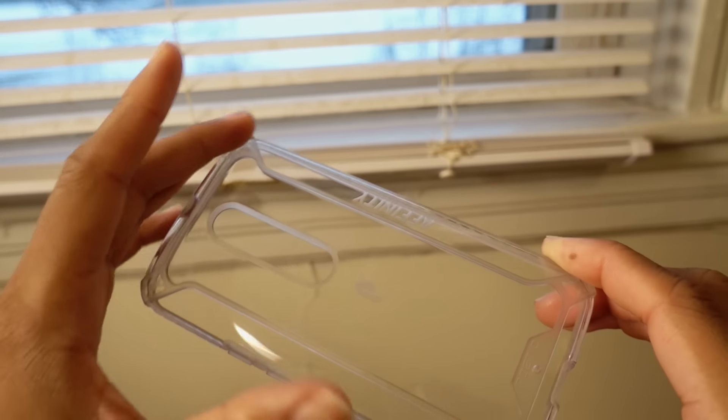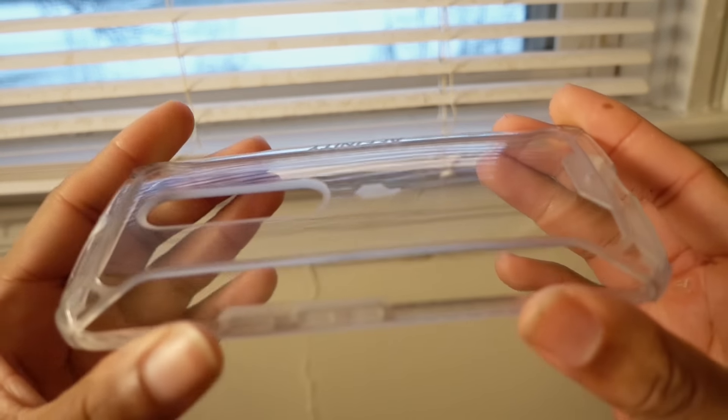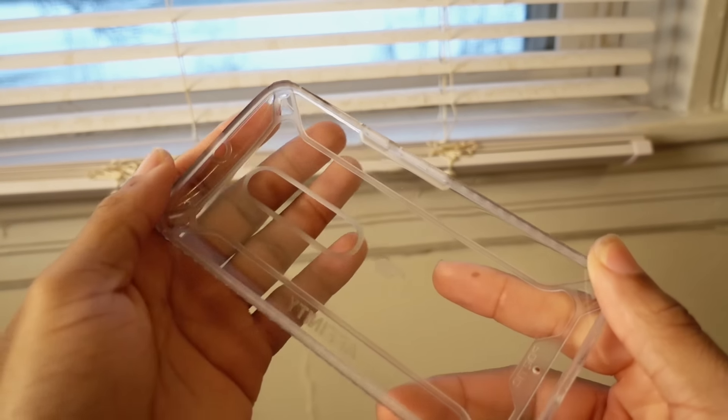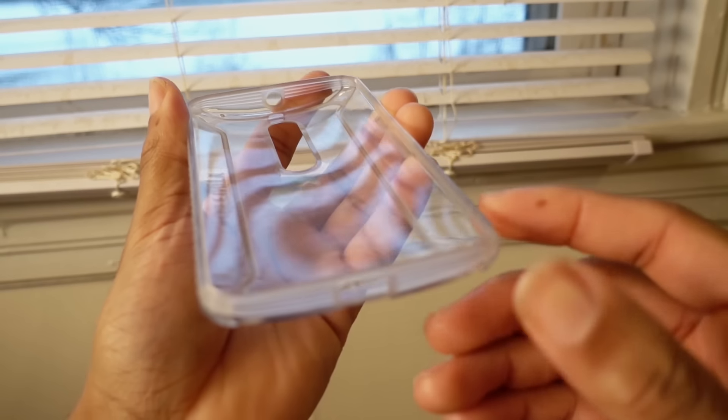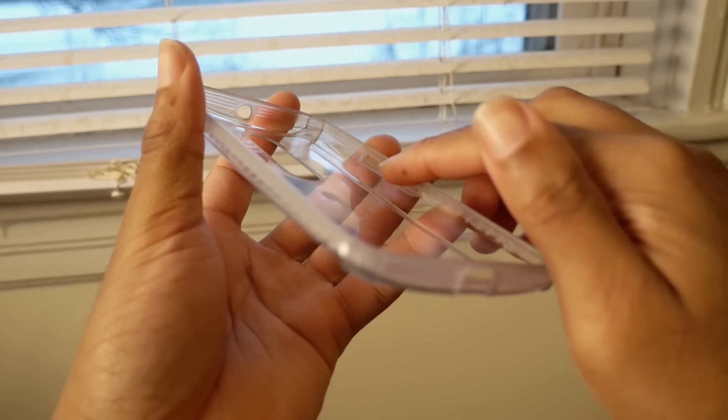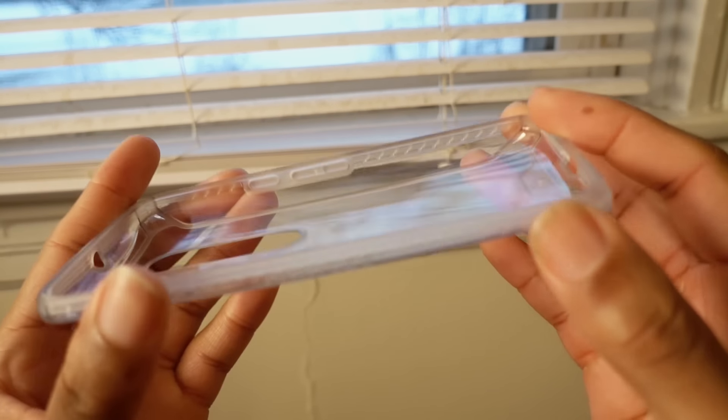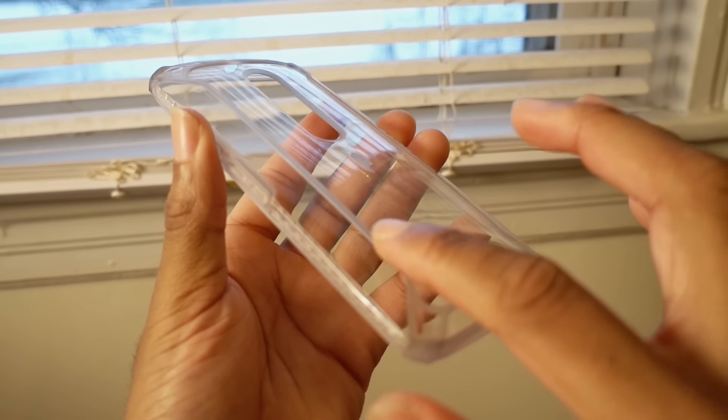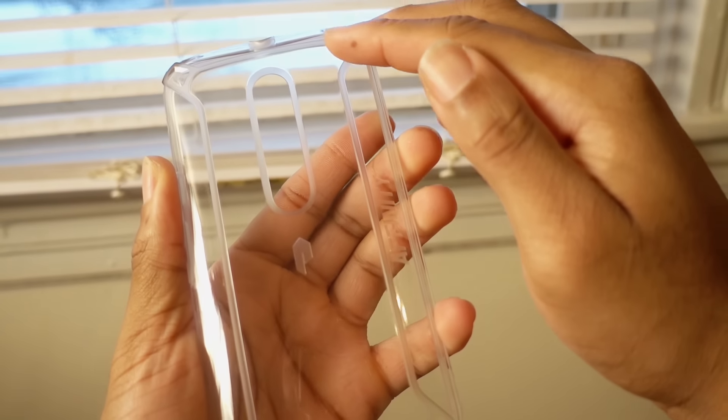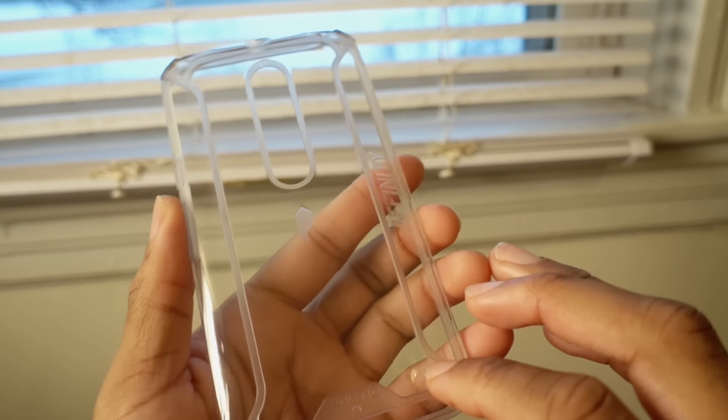On the inside you have ridges. This adds shock protection for when you drop the phone, so it goes all the way around. And if you turn it to the back, this is also raised here. This is to add more protection to the case itself.